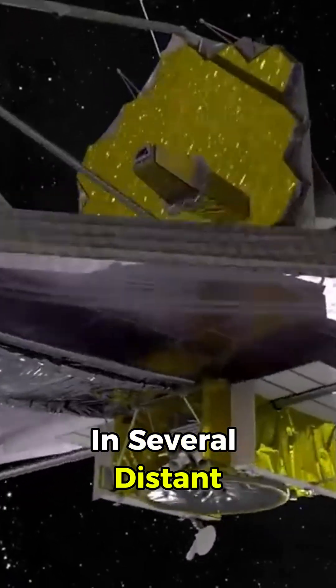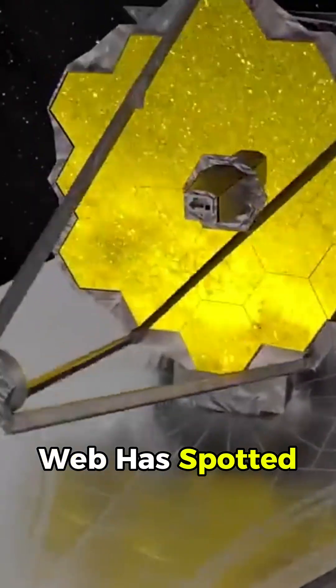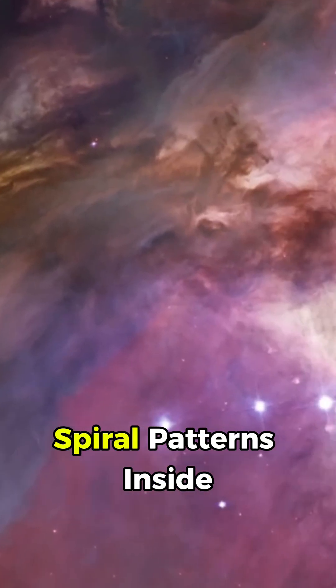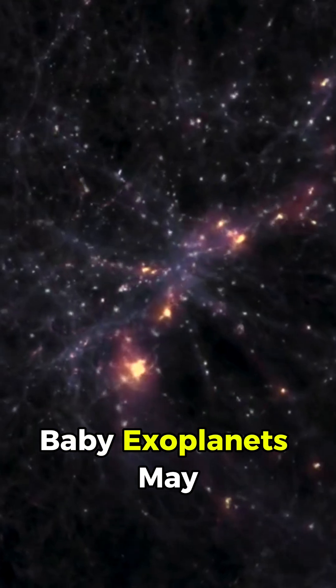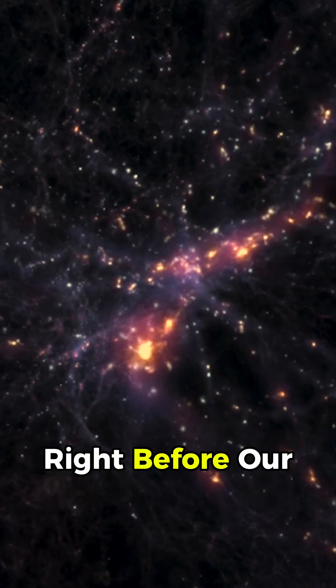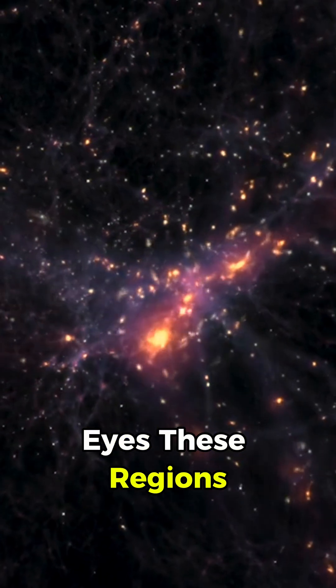In several distant systems, Webb has spotted strange gaps, bright knots, and spiral patterns inside these disks—strong clues that baby exoplanets may be forming right before our eyes.